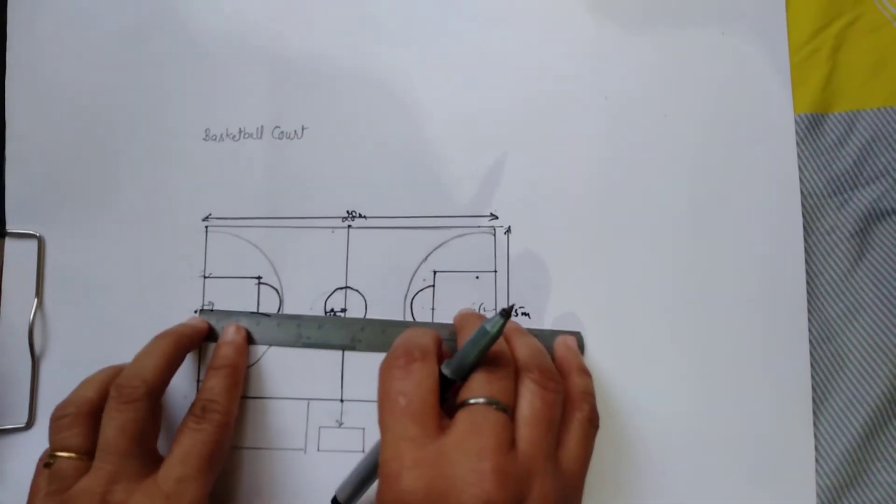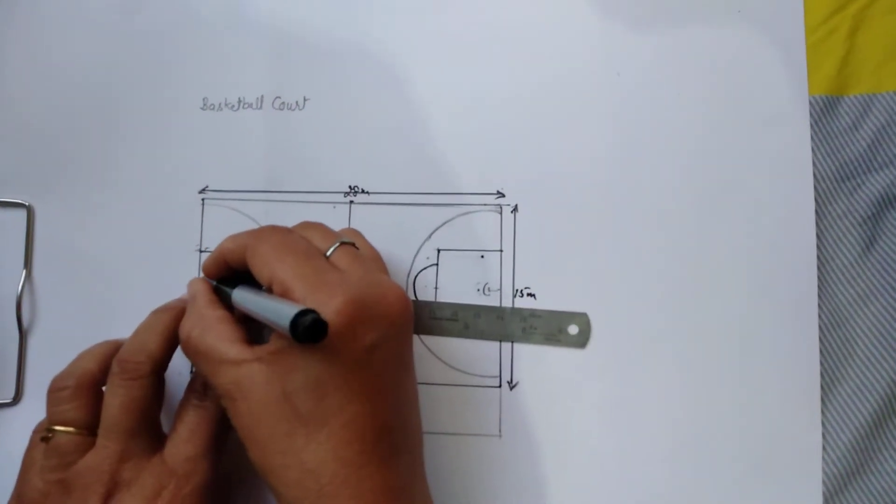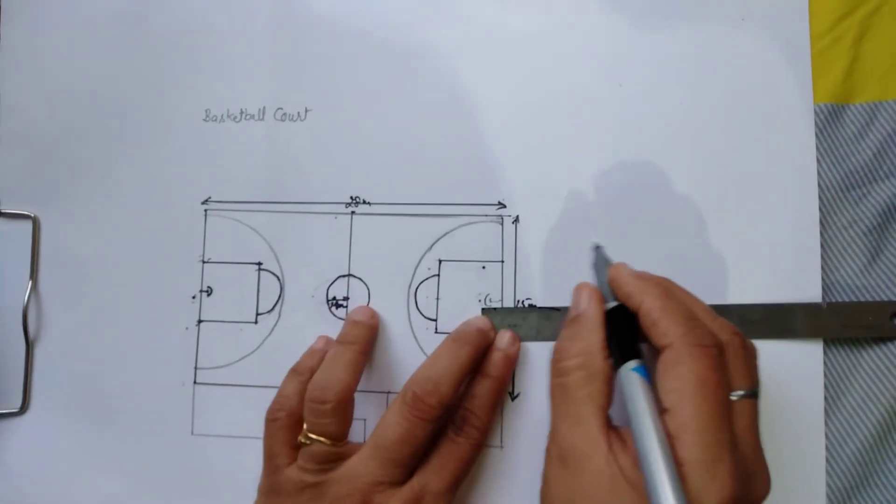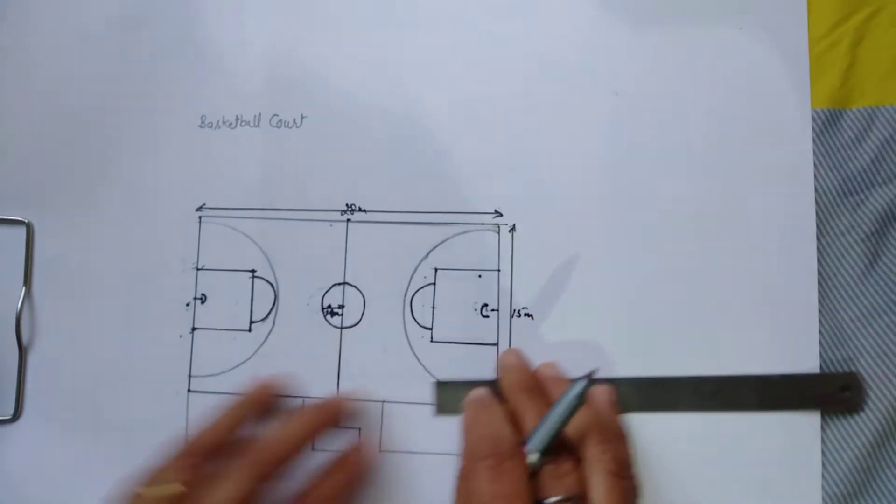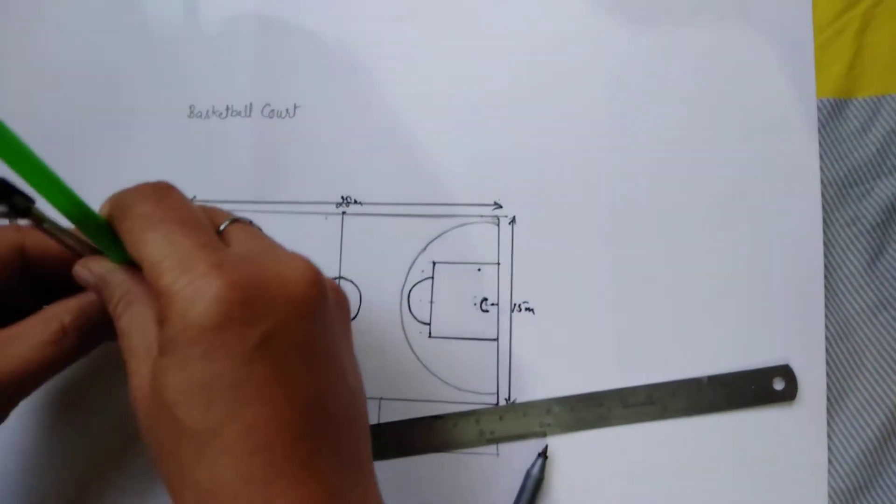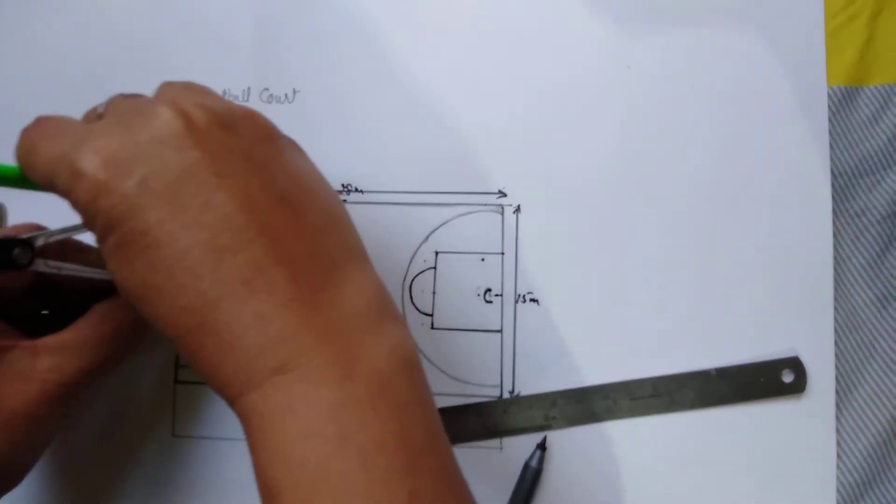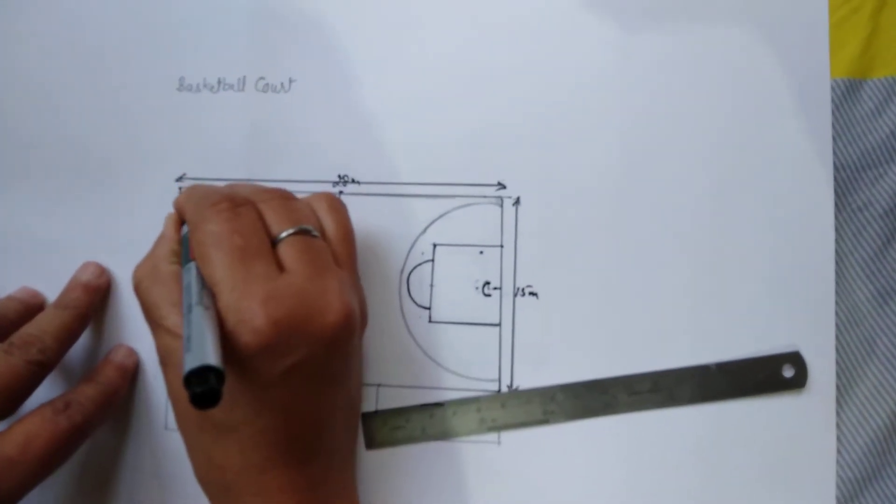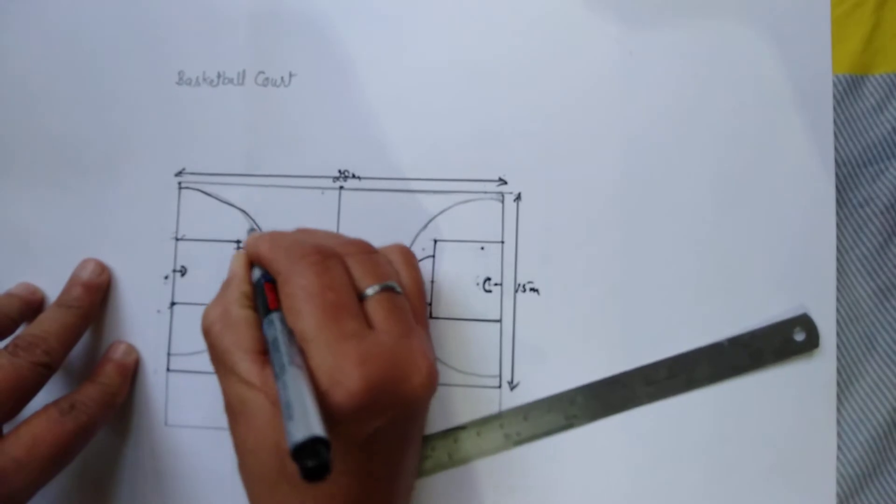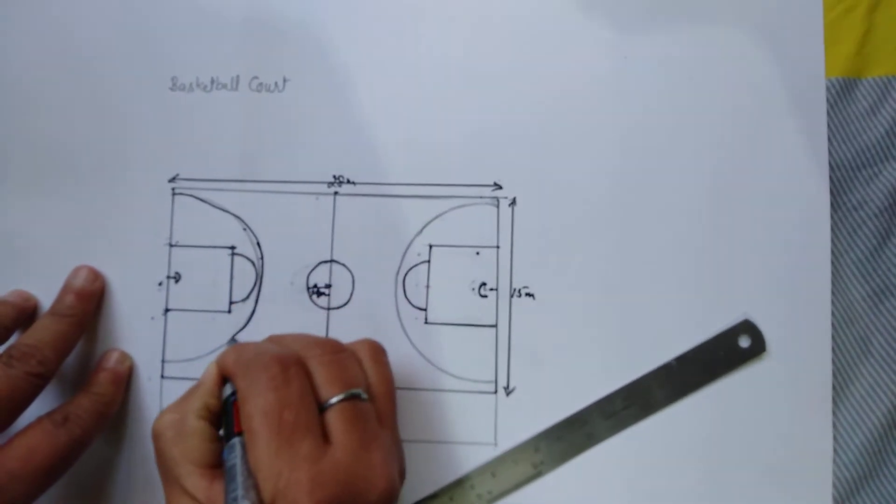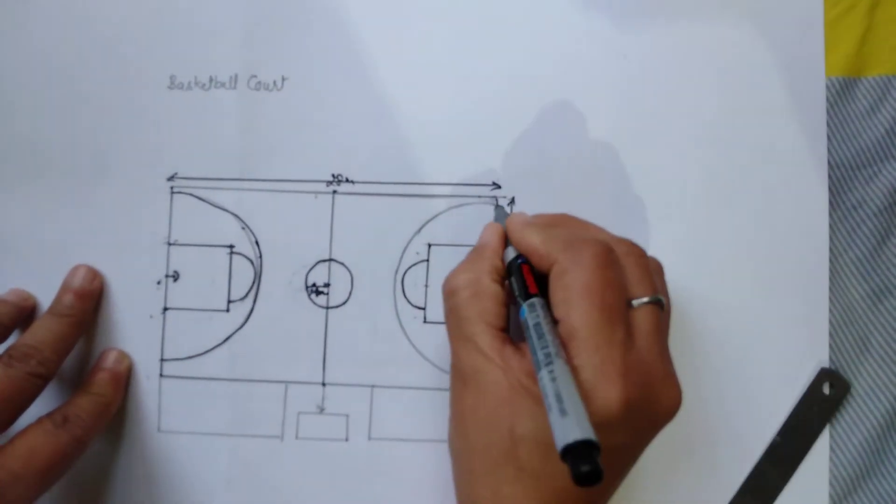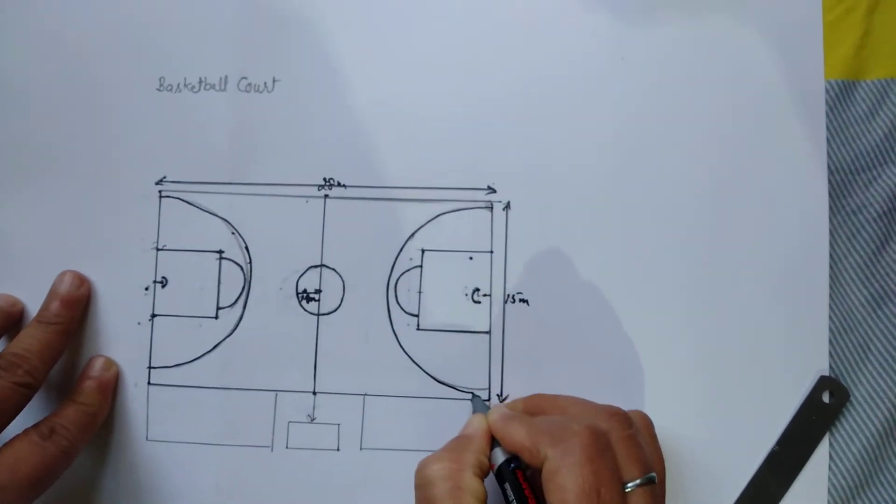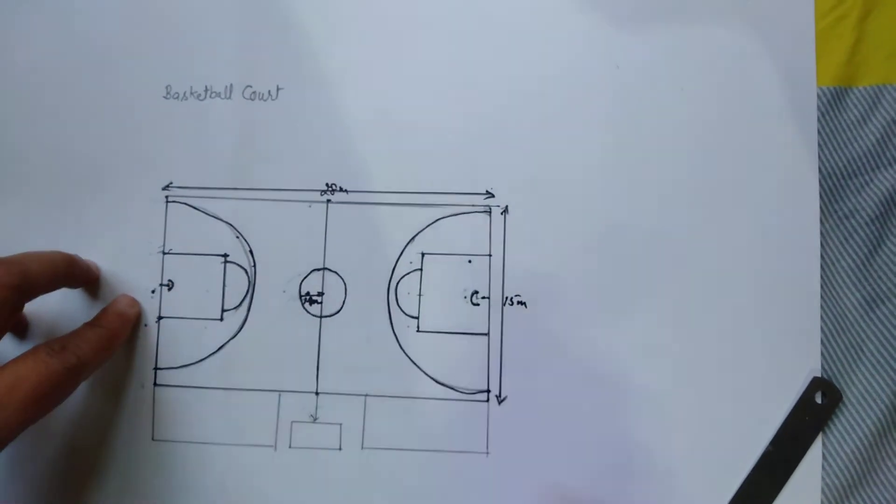Now with the help of this compass we make the semicircle. This is called three-point arc line. We can make the semicircle on both sides. Now measurement of this area: 5.80 meters, 6.75 meters, and this measurement 0.50 meters.